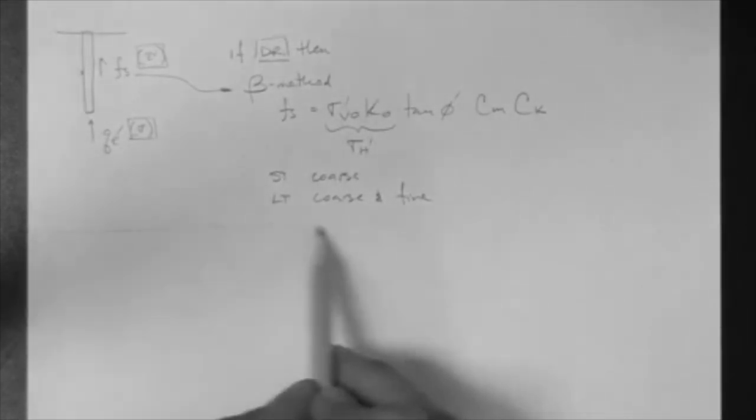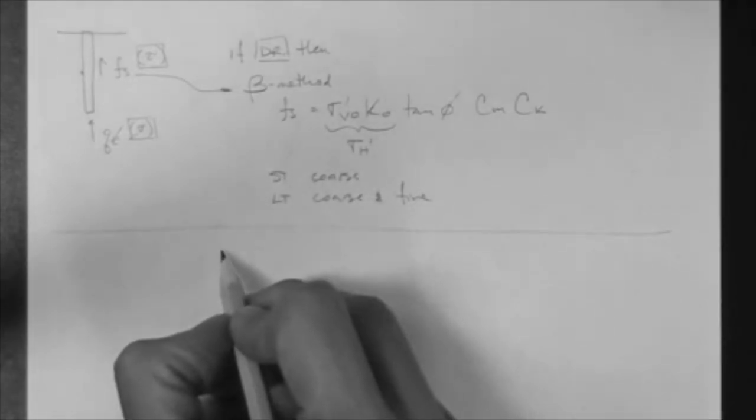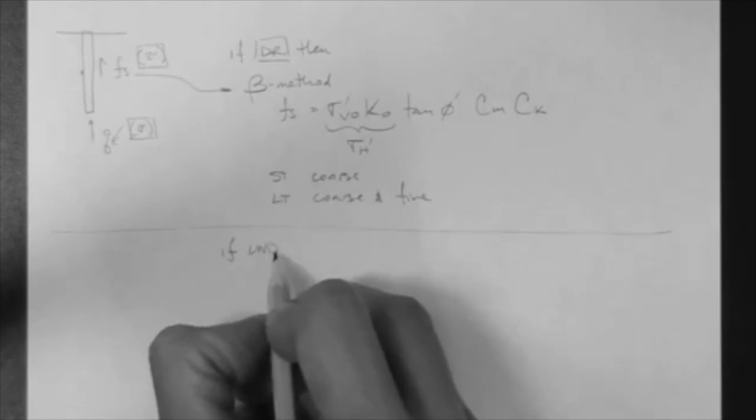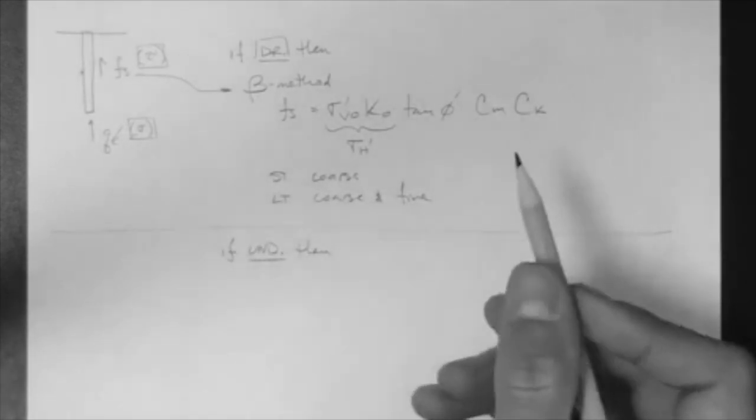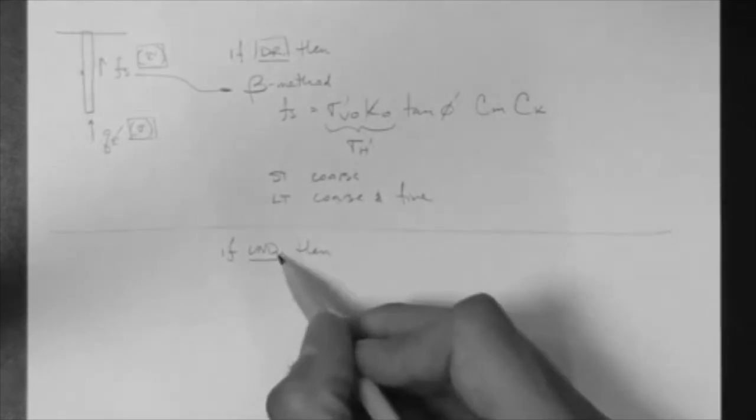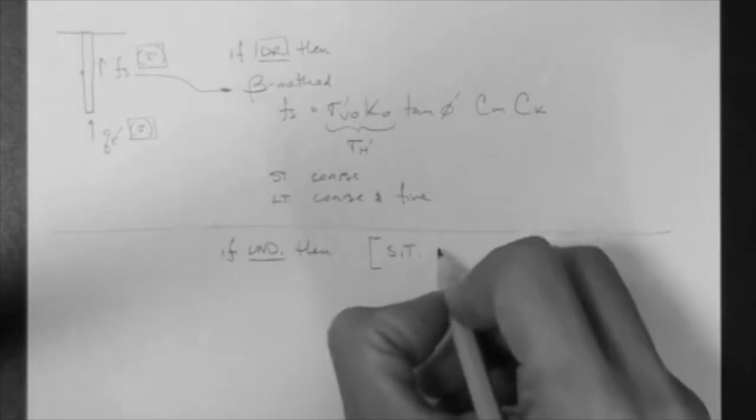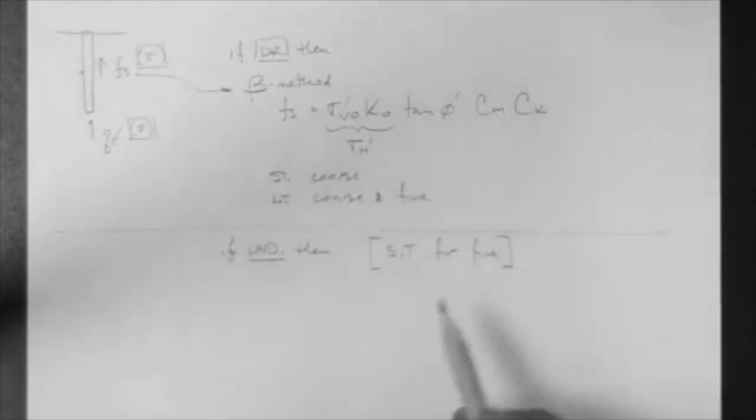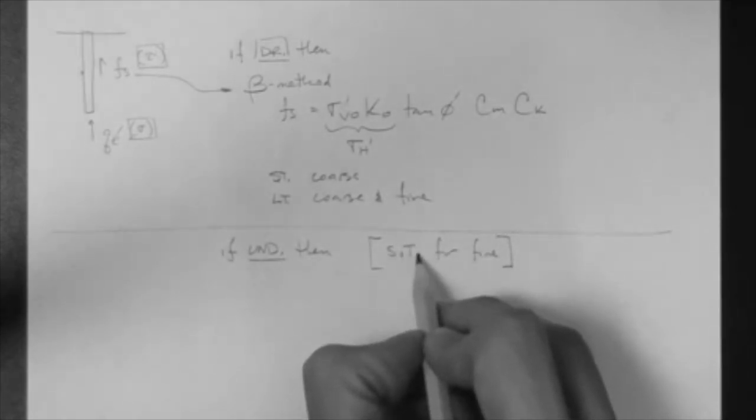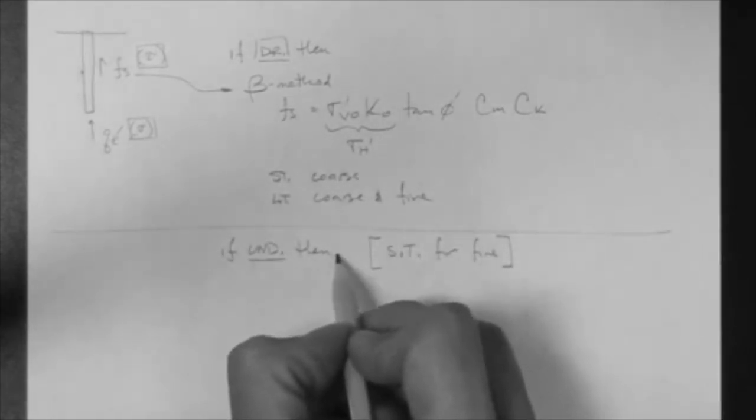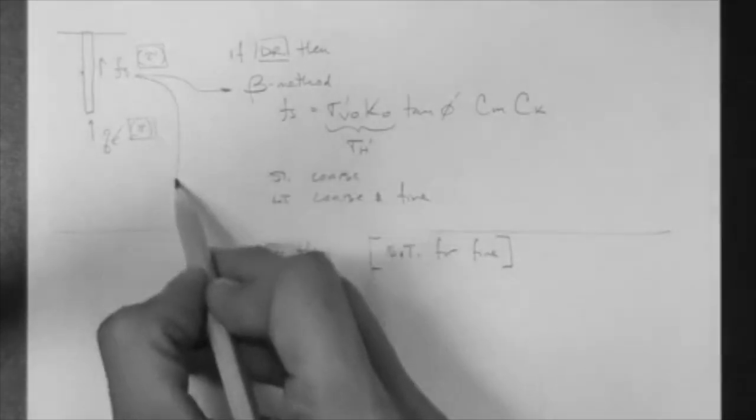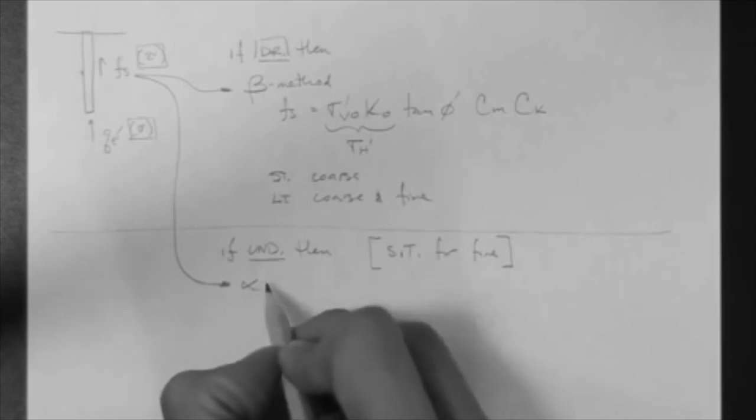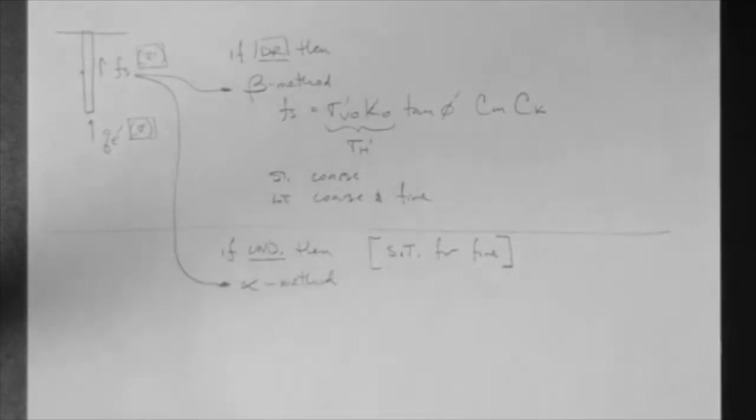The next thing to do is to realize that if we have undrained conditions, the only way we can have undrained conditions is in the short term for fine-grained soils. If we have undrained conditions which only occur in the short term for fine-grained soils, then we use the alpha method to get Fs. This is the topic that we're going to be covering in this video.